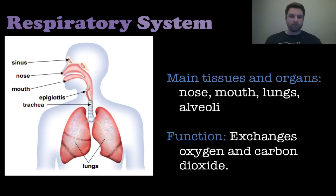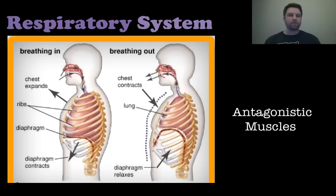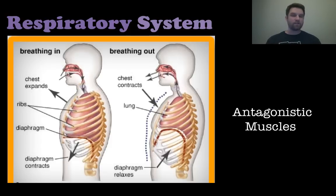Then there's the respiratory system, which includes your lungs, your nose and mouth, and the alveoli — the tiny sacs within your lungs that hold air and do a gas exchange. The main function of the respiratory system is to exchange oxygen and carbon dioxide: breathe in oxygen, breathe out carbon dioxide. One interesting thing about the respiratory system is antagonistic muscles — when certain ones contract, others relax. When you breathe in, your chest expands and your diaphragm contracts, while those intercostal muscles between your ribs are actually relaxing. When you breathe out, the diaphragm relaxes and the chest contracts, meaning those intercostal muscles are contracting.